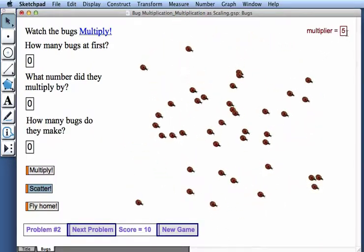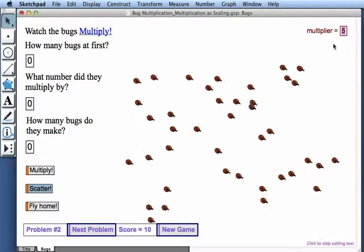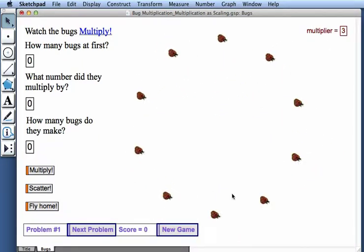For our next game, perhaps we'd like to explore multipliers of 3. I'll change this 5 to a 3, and then press New Game. Now when my bugs split, they split into 3.